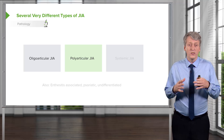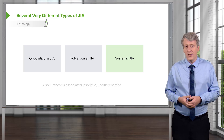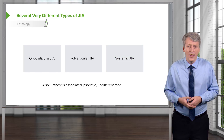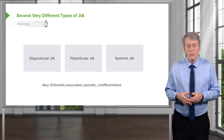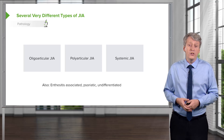There are other types of JIA that are less common. Enthesitis-associated JIA is a variety that causes enthesitis, which is inflammation of the insertion around the joint. Psoriatic JIA is associated with psoriasis of the skin. Undifferentiated JIA may represent a variety of different types of JIA that don't really fit into one category in a particular patient.